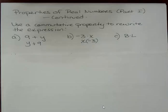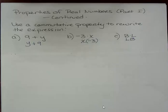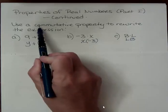For the last one, if I have BL, then I would change that to LB. That's all I would do to change that using the commutative property. Commutative property has to do with order. Look, commutative is order, CO.